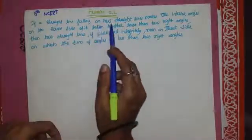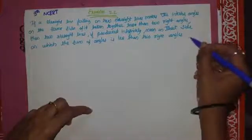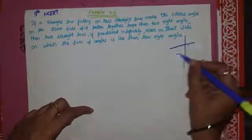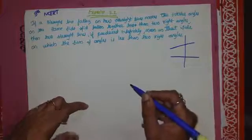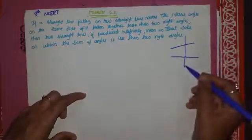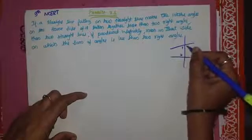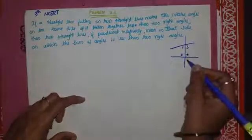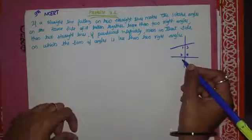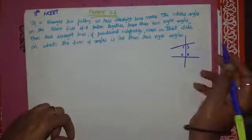The fifth postulate states: if a straight line falls on two straight lines, it makes interior angles on the same side of it. So when a straight line falls on any two straight lines, it creates four angles — the interior angles are on the same side.